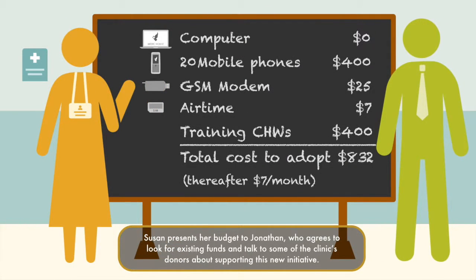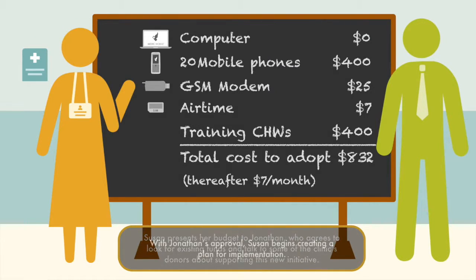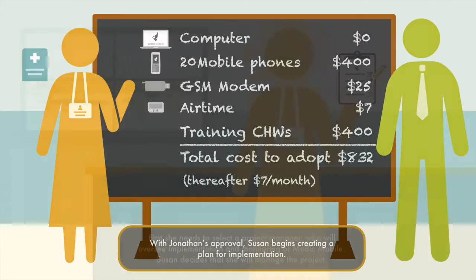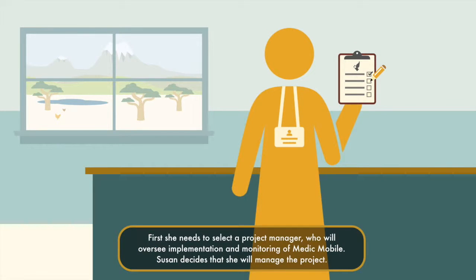Susan presents her budget to Jonathan, who agrees to look for existing funds and talk to some of the clinic's donors about supporting this new initiative. With Jonathan's approval, Susan begins creating a plan for implementation. First, she needs to select a project manager who will oversee implementation and monitoring of MedicMobile. Susan decides that she will manage the project.